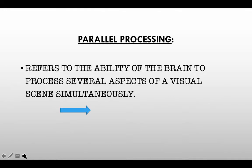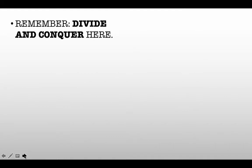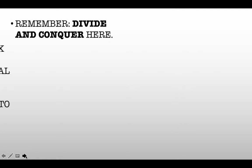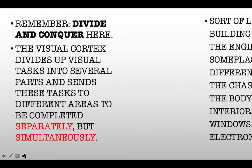Parallel processing refers to the ability of the brain to process many different aspects of a visual scene separately and simultaneously. This explains why we can process a visual scene so incredibly fast. You want to think divide and conquer here — our visual scene is divided into several different simpler aspects, and each one of those aspects is processed in a different area of our visual cortex at the same time, and then brought together for recognition. Separate but simultaneously.